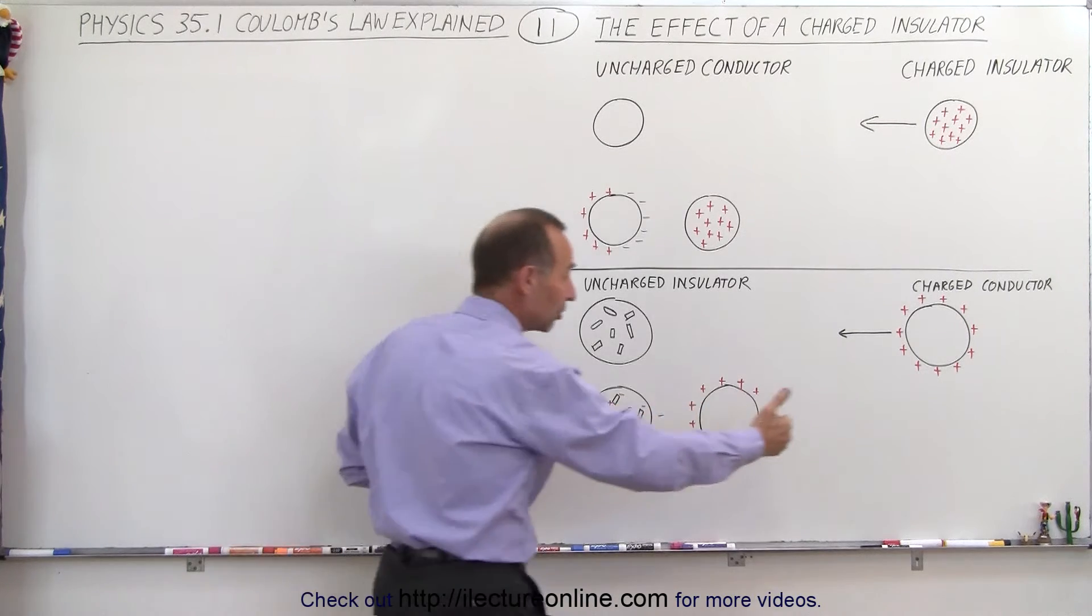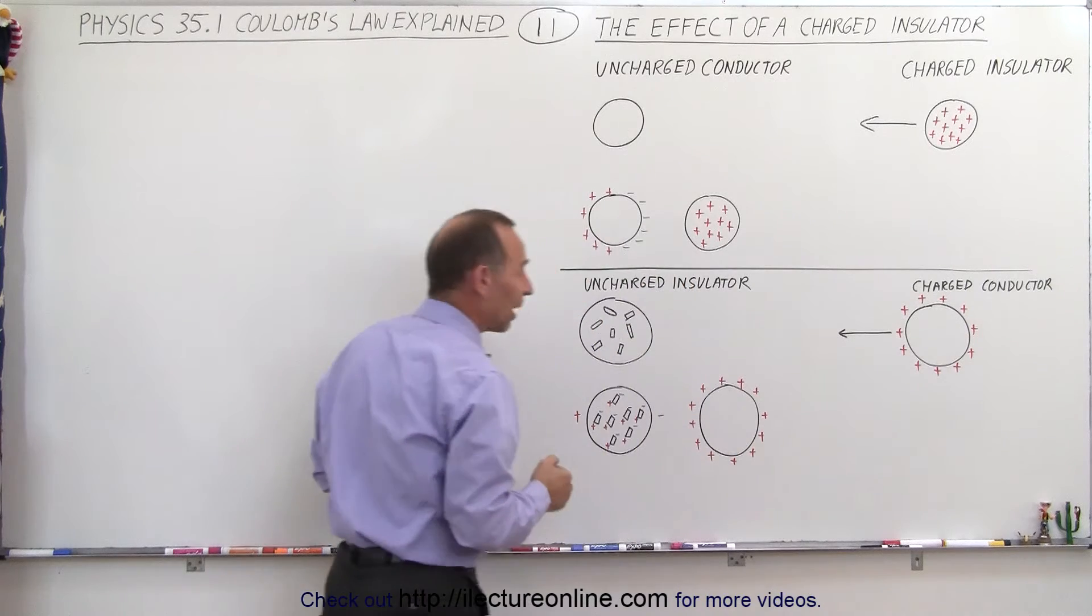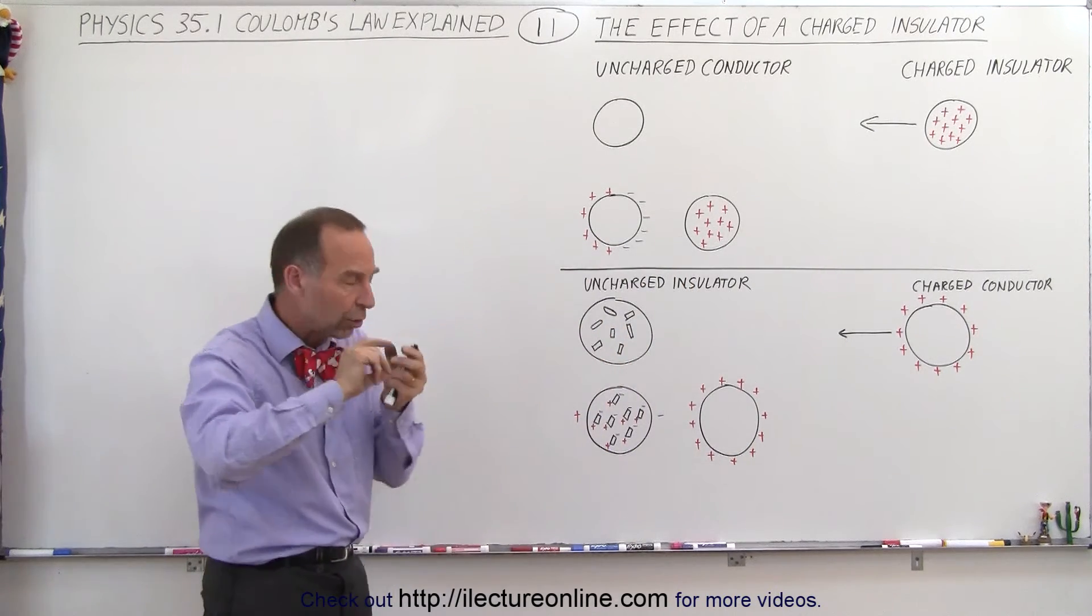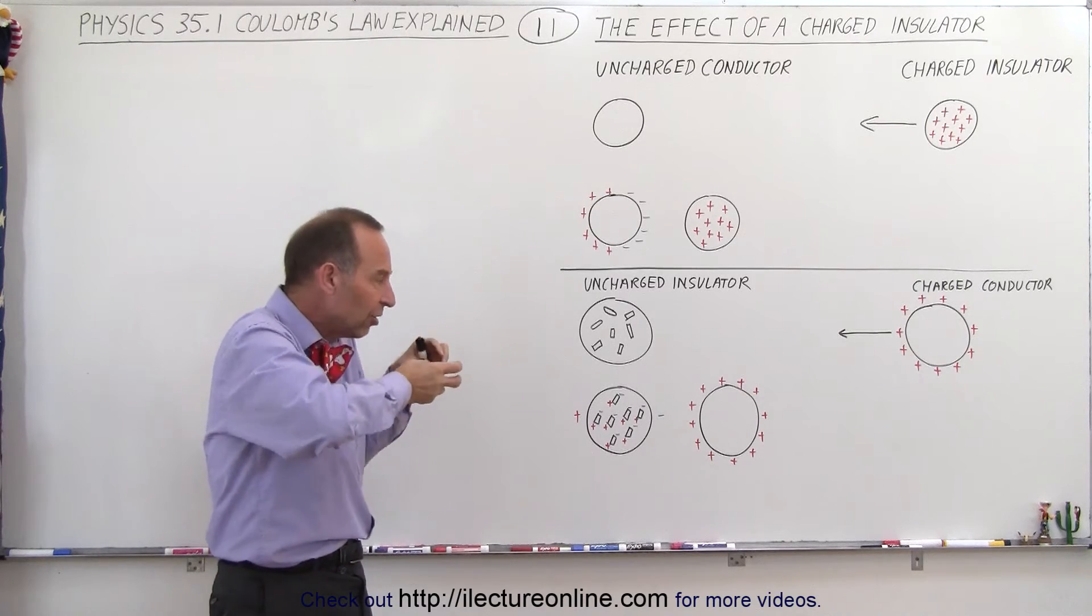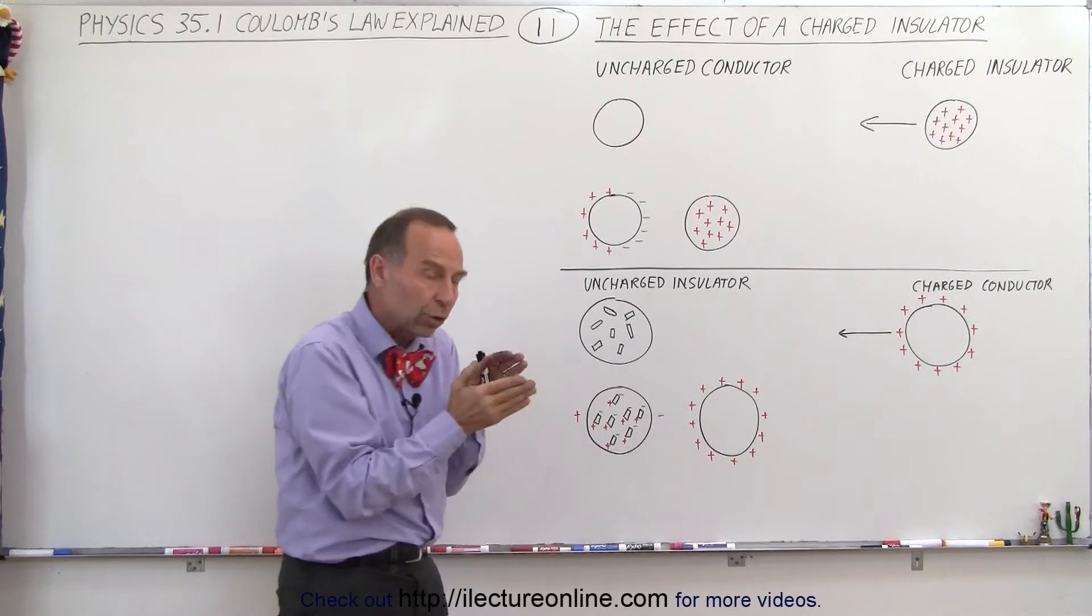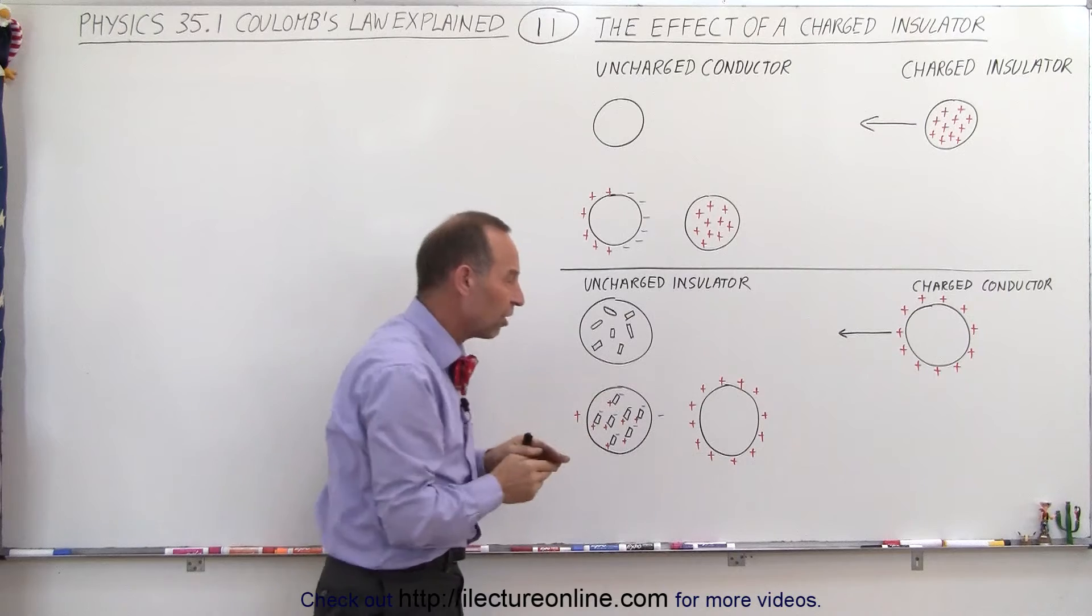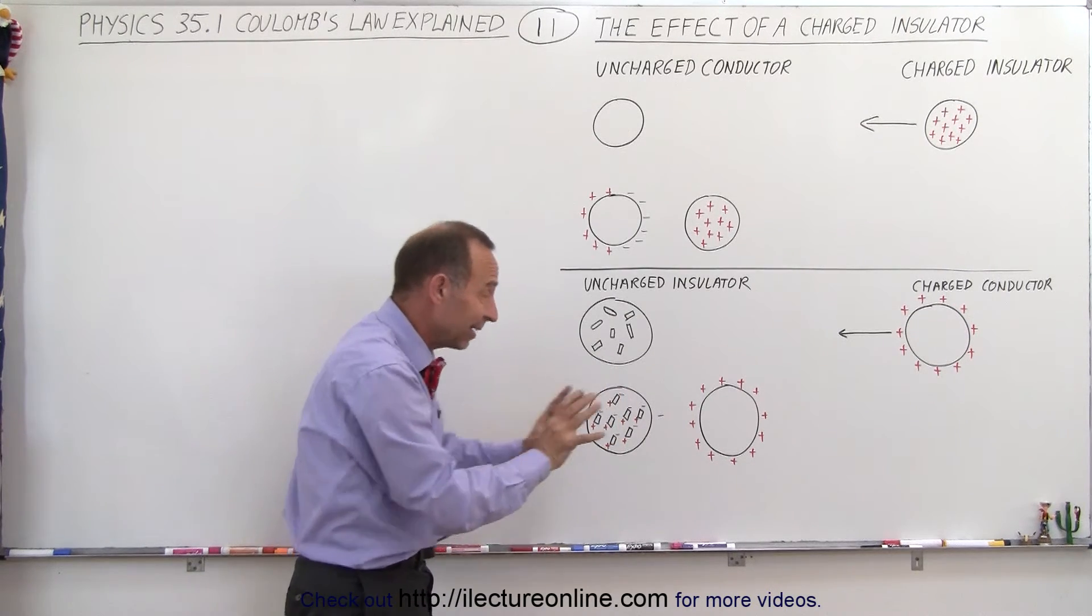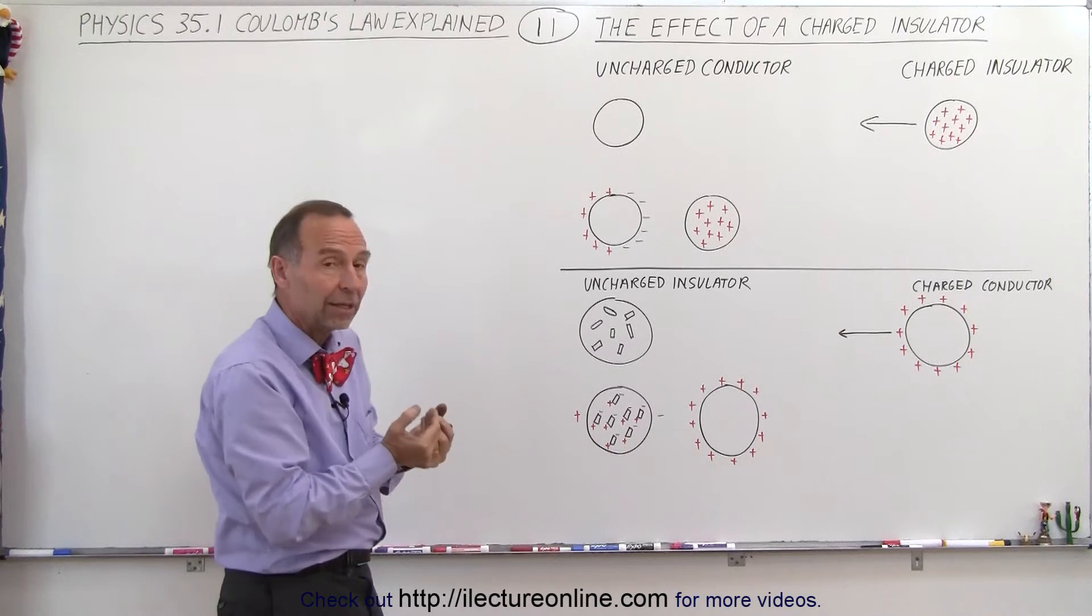When you bring an object close by that is positively charged, these molecules, which are slightly polar, will try to bend such that the negative end of the molecule will be closer to that charged object, and the positive end will be farther away, because the negative ends get attracted and the positive ends get repelled.